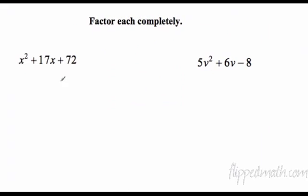Factor each completely. These are our magic x's. Number first times last: 1 times 72 is 72, 17 goes in the middle. Two numbers that multiply to 72 and add to 17 are 8 and 9, so I have (x + 8)(x + 9).